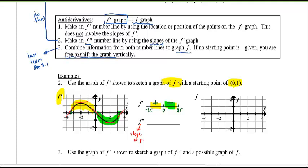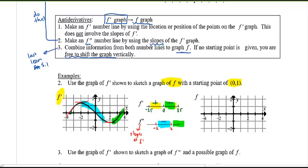Looking at the slopes of f prime: at x = -2 the slope is zero, and at x = 2 the slope is also zero. Between -2 and 2 the slopes are decreasing, so f'' is negative there. For the region beyond x = 2 the slopes are increasing, so f'' is positive. To the left of x = -2 the slopes are also increasing, so f'' is positive there as well. Great.